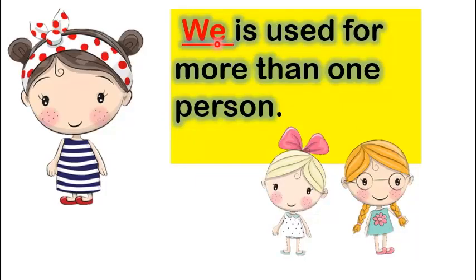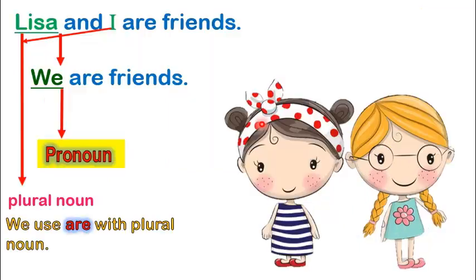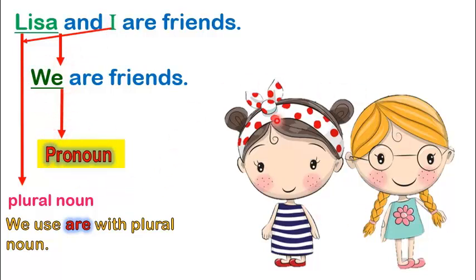Pronoun we. We is used for more than one person. Lisa and I are friends. We can also say, we are friends. We refers to Lisa and I. So, we is a pronoun that can be used for more than one person.